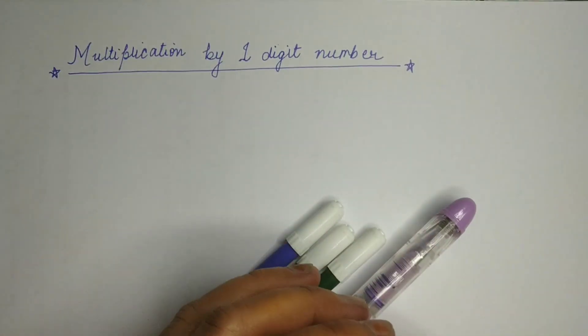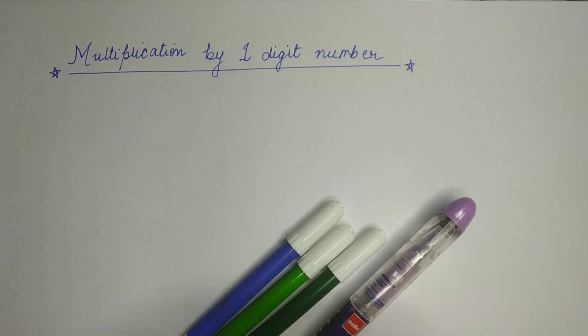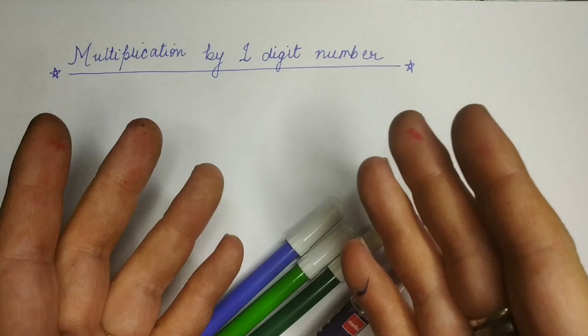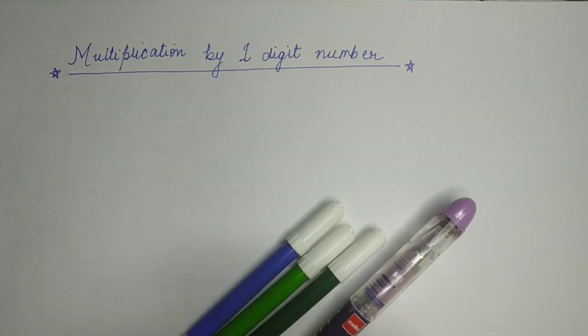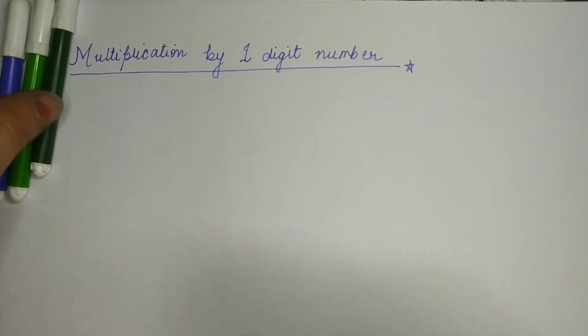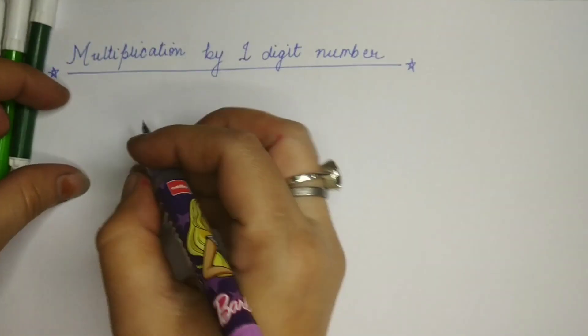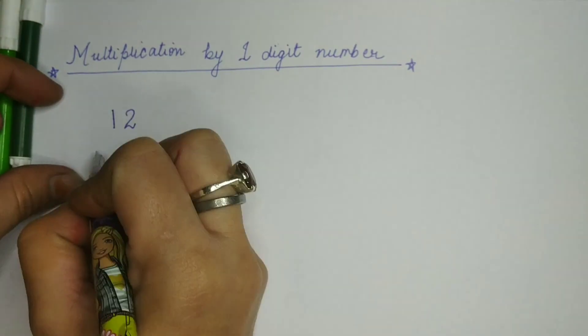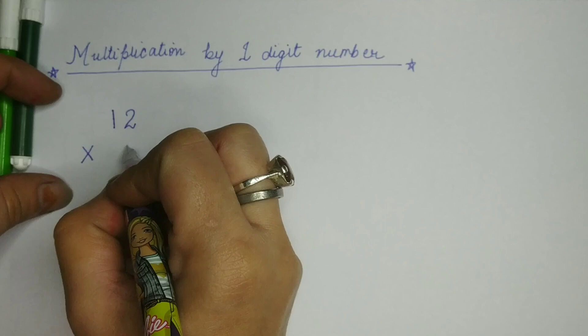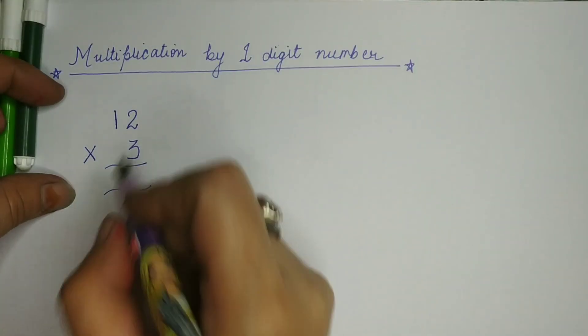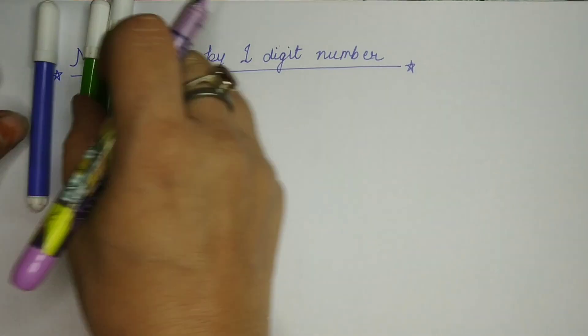today I am going to explain you the multiplication by one digit number. Hum multiplication kareenge one digit number ki saath. One digit number ma'am ye kya hota hai? Yes children, multiplication with one digit number means you have big number above, aapke paas oopar bada number hooga aur neechi aapke paas chota number hooga. This is one digit number. This is called one digit number.